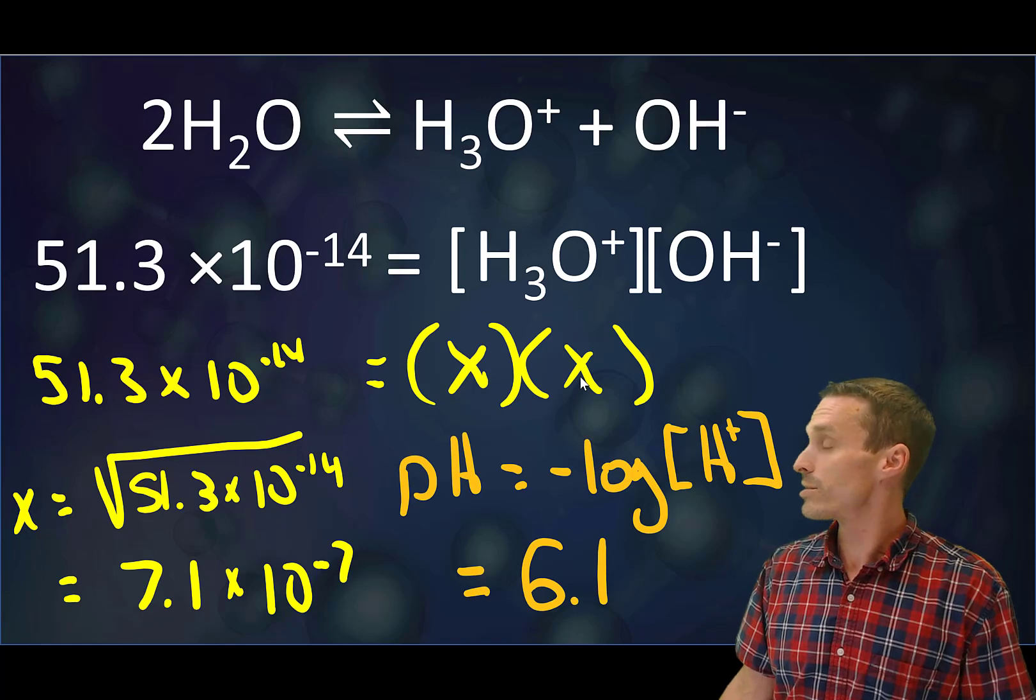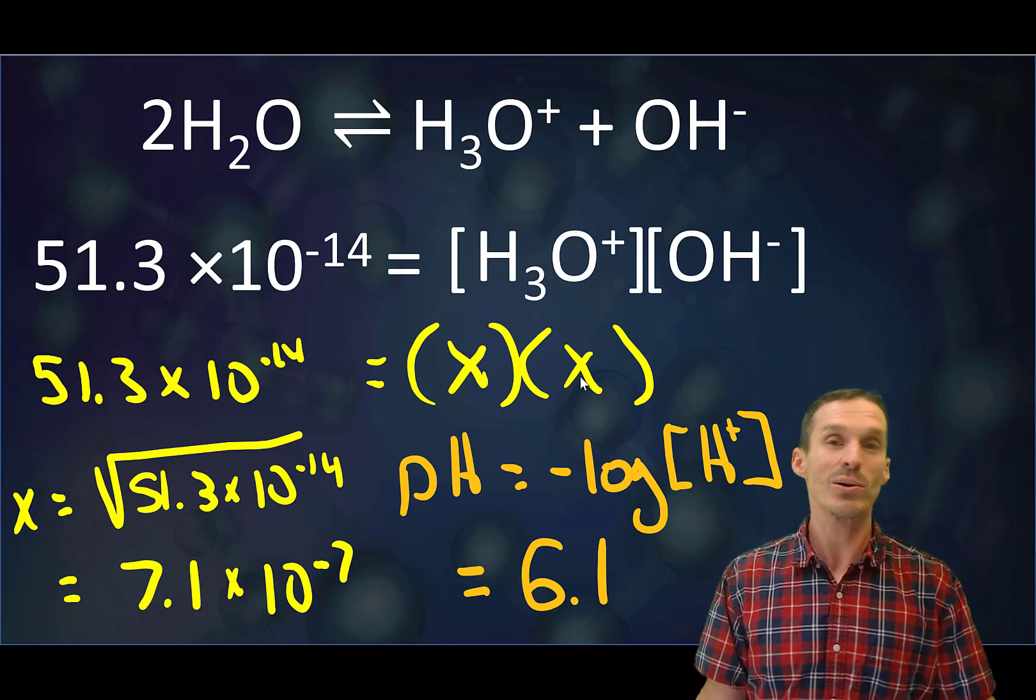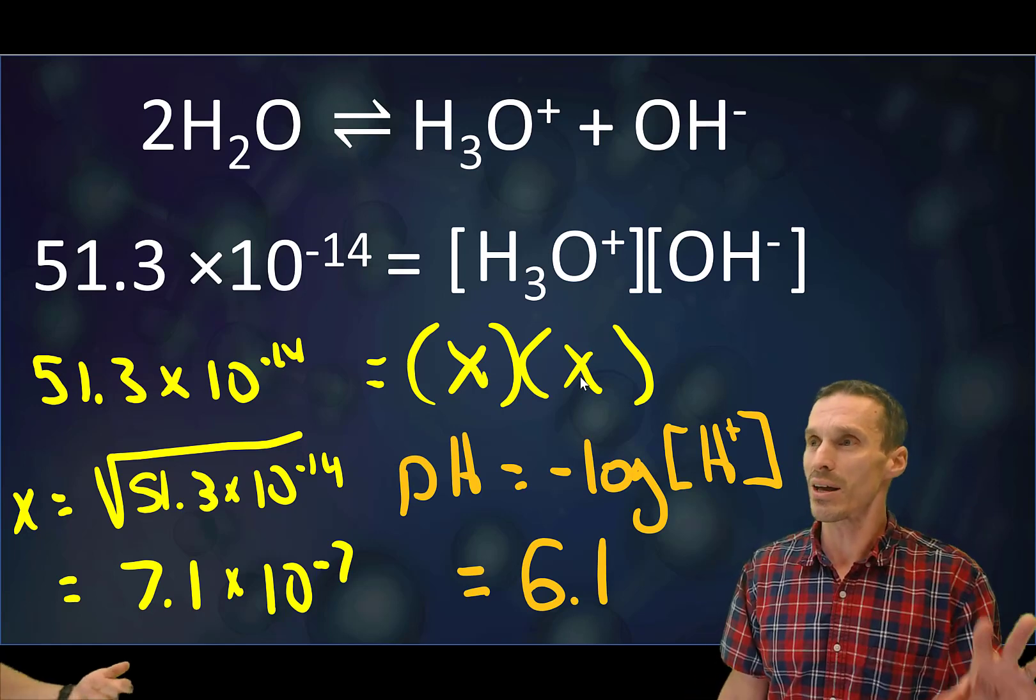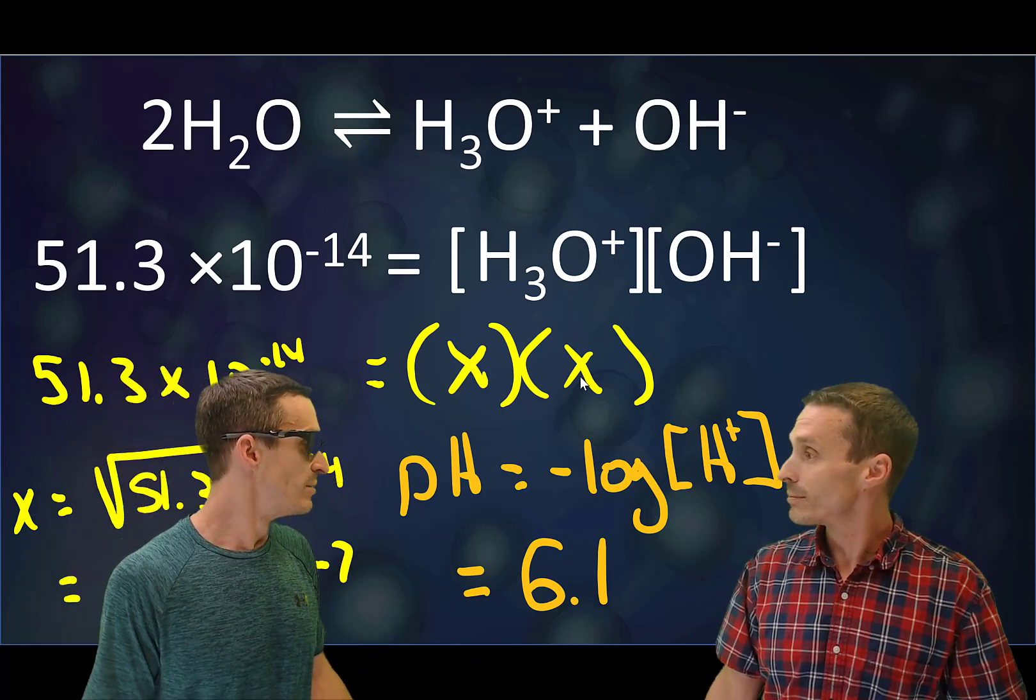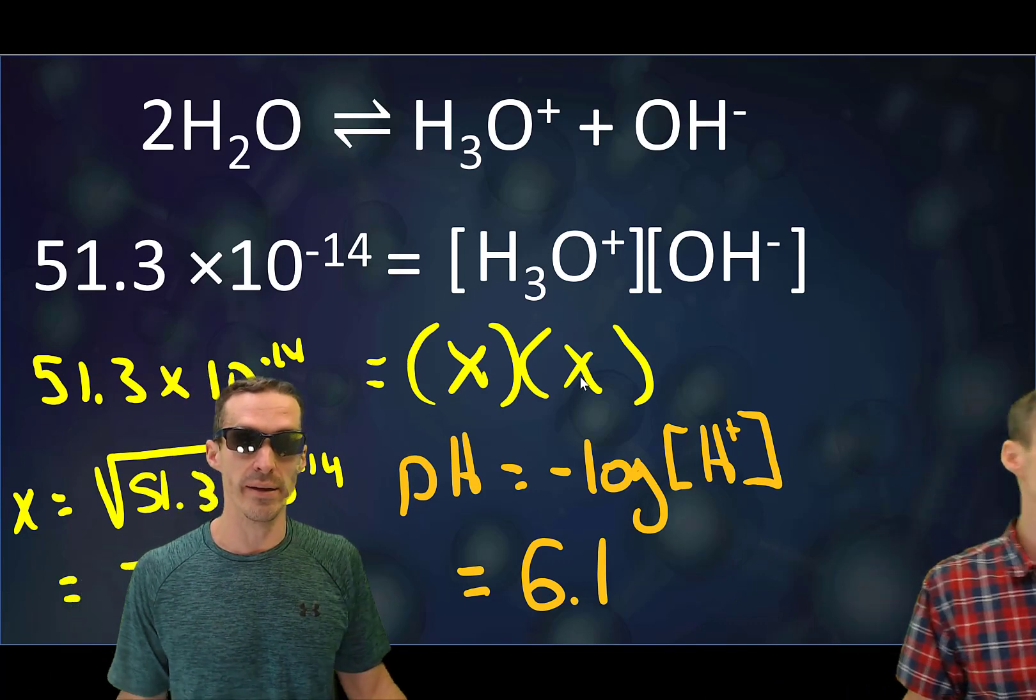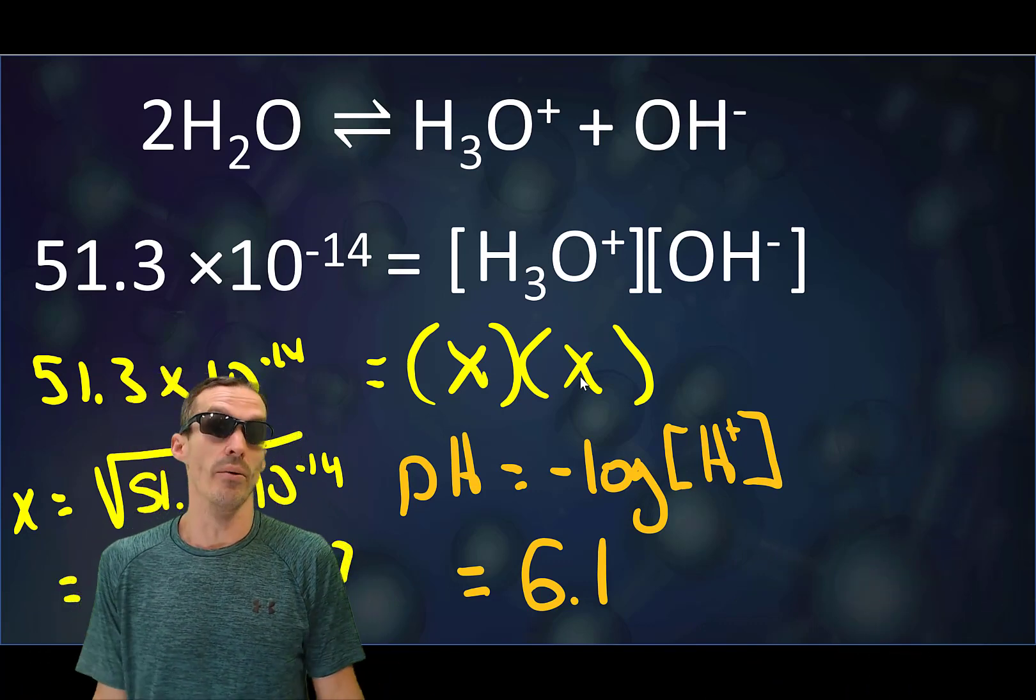What does that work out to be? Well, in this case the pH is 6.1. And I know what you're thinking: the water is acidic. No, boiling water is neutral. Yeah, concentration... I guess I didn't know that.